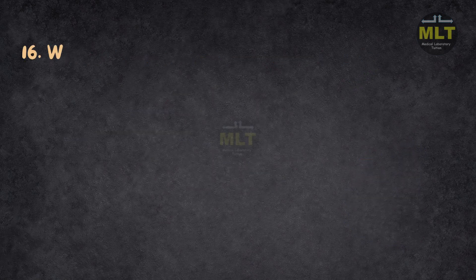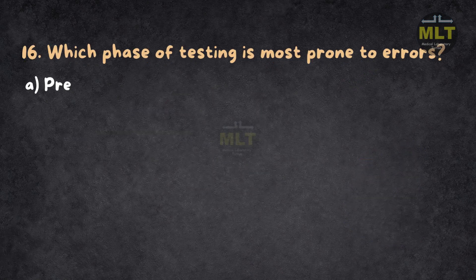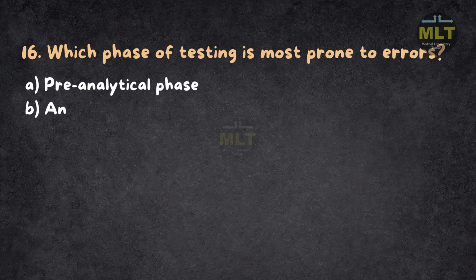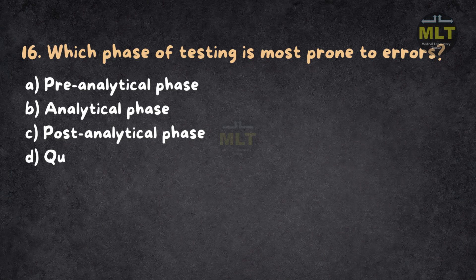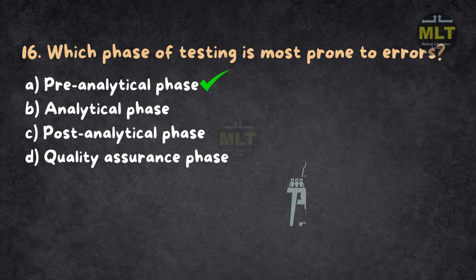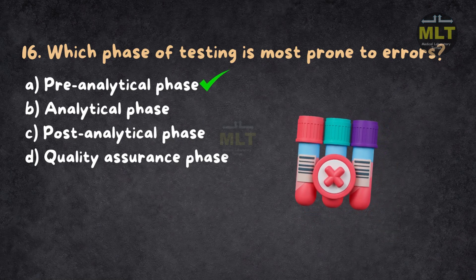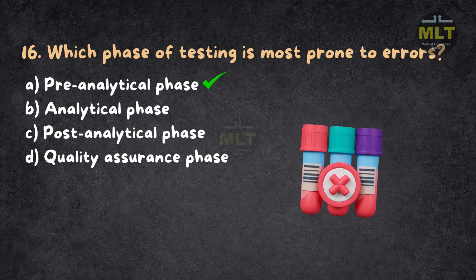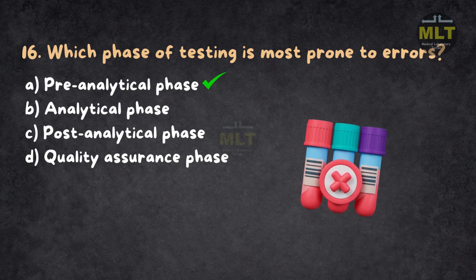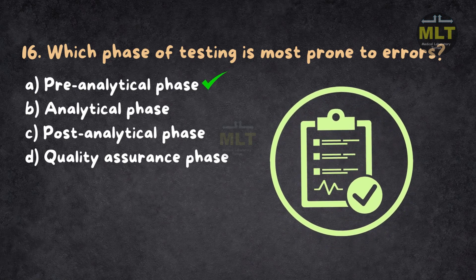Question 16: Which phase of testing is most prone to errors? a. Pre-analytical phase. b. Analytical phase. c. Post-analytical phase. d. Quality assurance phase. Correct answer: a. Pre-analytical phase. The pre-analytical phase, including sample collection, labeling, and transport, accounts for most errors in laboratory testing. While the analytical phase is crucial, it is better controlled through QC measures. Post-analytical errors are less frequent.